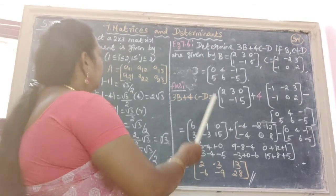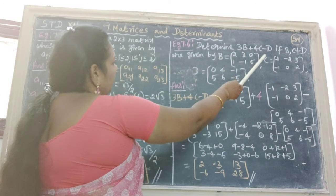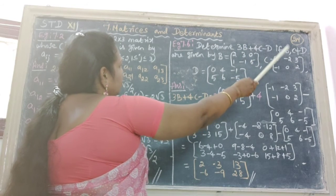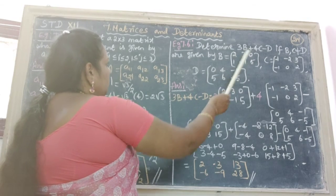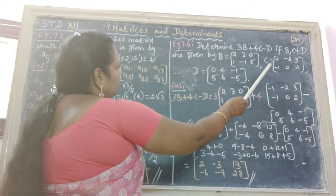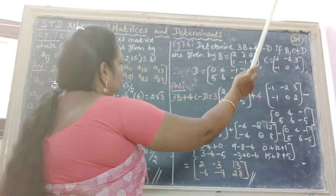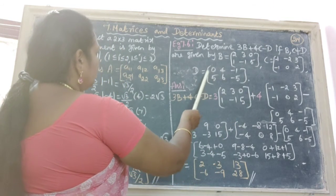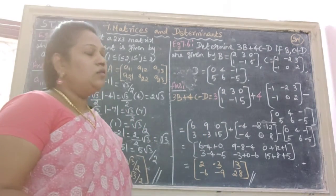Next sum, example 7.6: Determine 3B plus 4C minus D if B, C, and D are given by capital B equal to 2, 3, 0, 1, minus 1, 5. Capital C is equal to minus 1, minus 2, minus 2, 3, minus 1, 0, 2. Capital D equal to 0, 4, minus 1, 5, 6, minus 5.